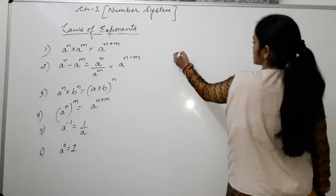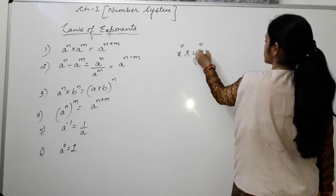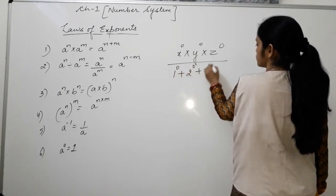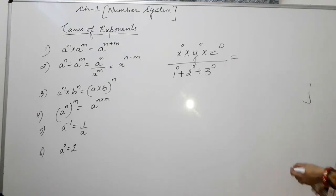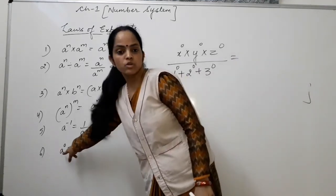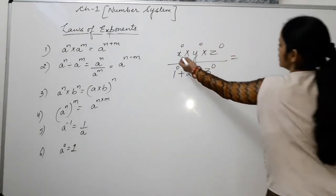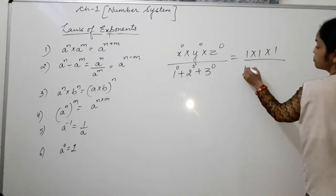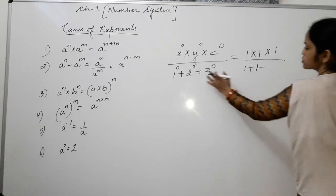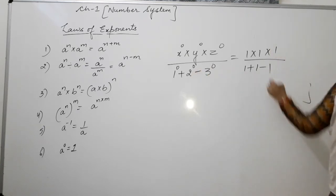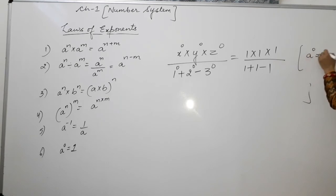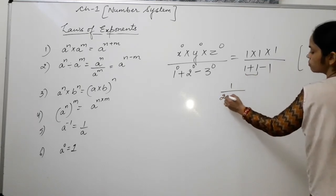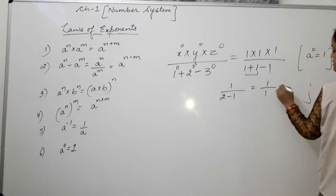Another example: x to the power 0 multiplied by y to the power 0 multiplied by z to the power 0, upon 1 to the power 0 plus 2 to the power 0 plus 3 to the power 0. Since any number to the power 0 equals 1, this becomes 1 × 1 × 1 upon 1 + 1 + 1, which is 1 upon 3.